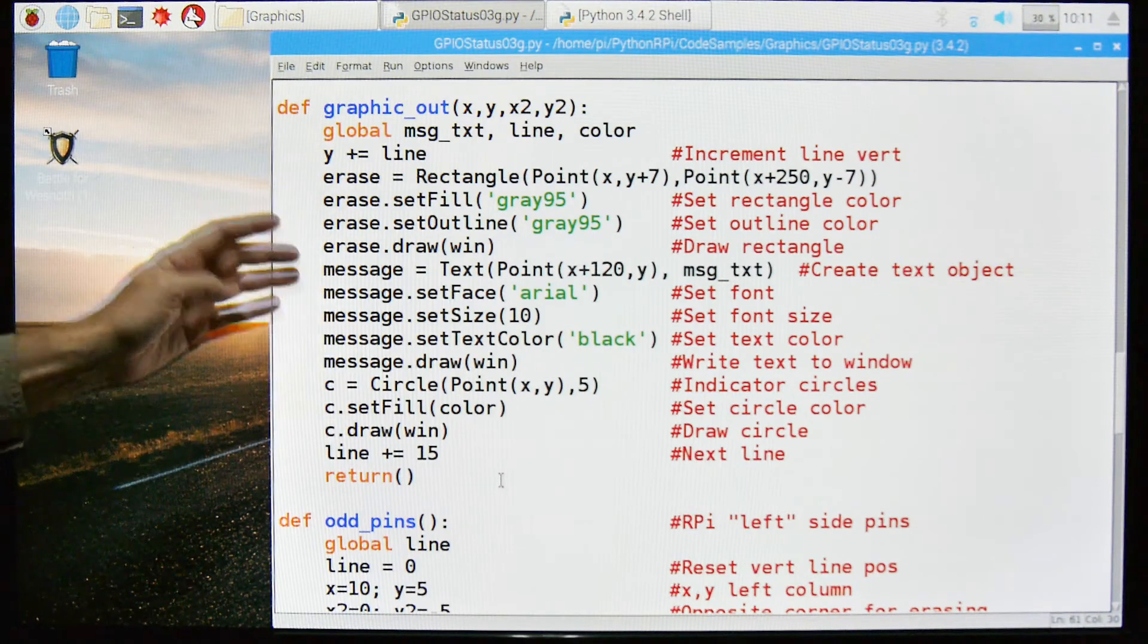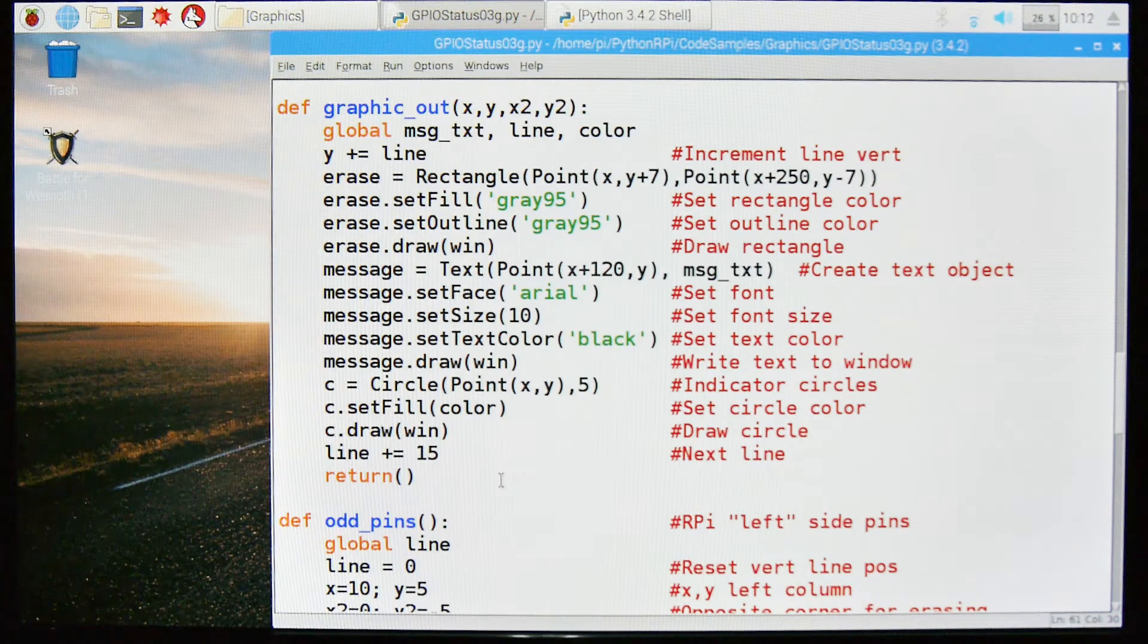So this is our graphic output. This is going to be the thing that creates the graphic window that's going to give us the depiction of what's happening with our pins on the Raspberry Pi. Let's scroll down again.